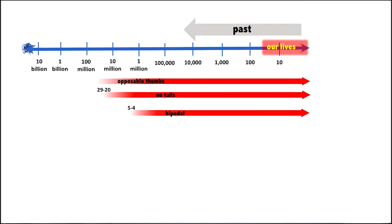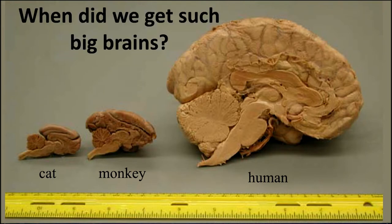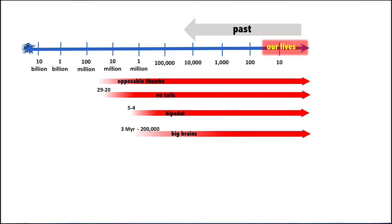How about cat, monkey, and human brains? When did we get such big brains? We look at fossil evidence and we can tell that somewhere between about three million and about two hundred thousand years ago is when our brains really got much bigger than our other cousins.